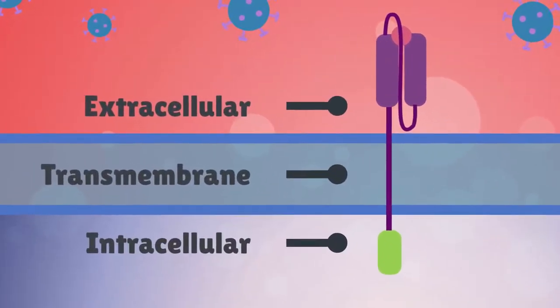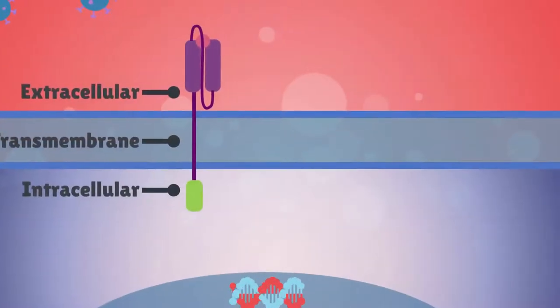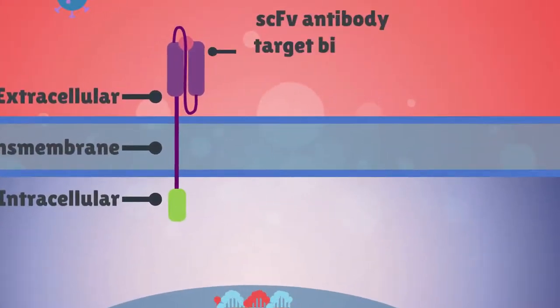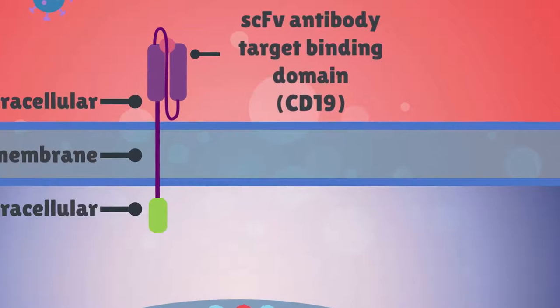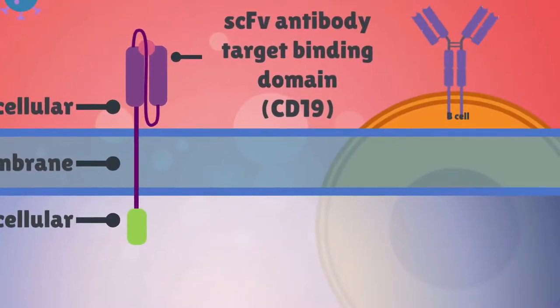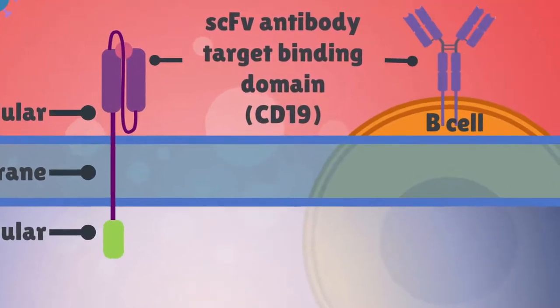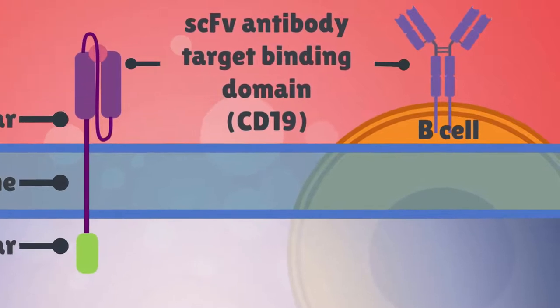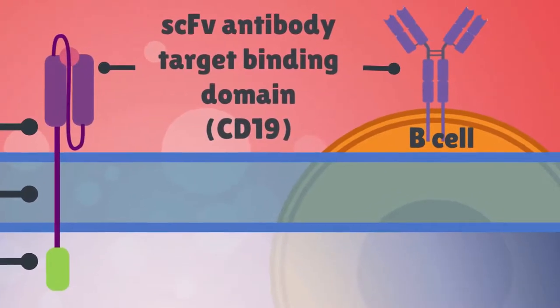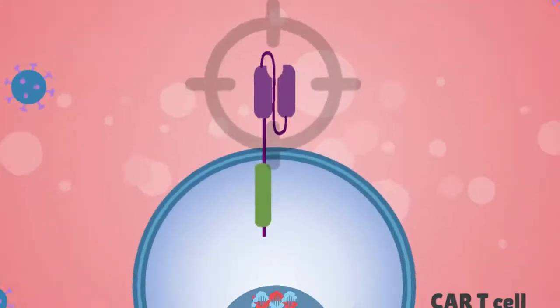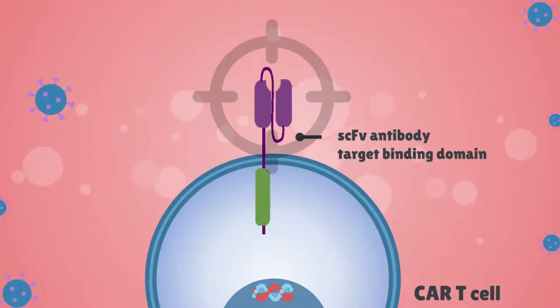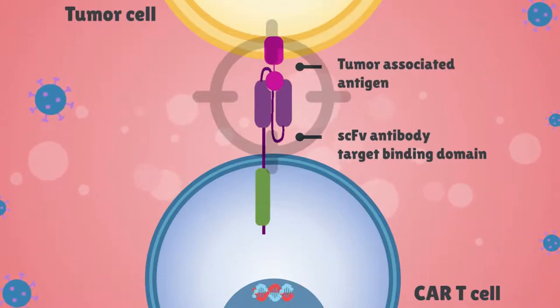The extracellular segment is a single chain variable fragment, which is derived from the antigen binding region of the monoclonal antibody CD19 found on the B-cell target. This antibody recognizes tumor-associated antigens and can be engineered to target virtually any antigen if an appropriate cancer-specific target is identified.